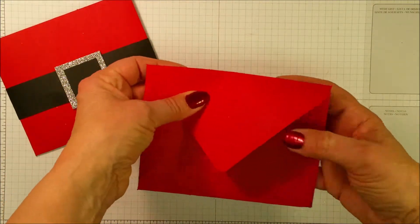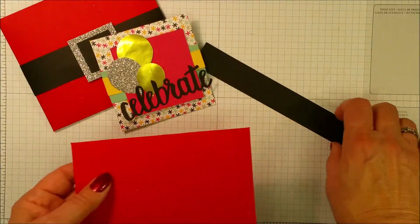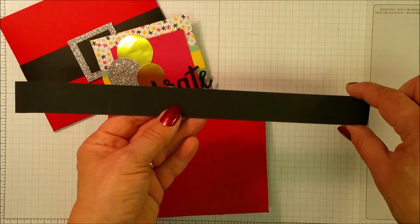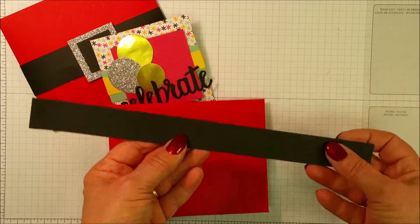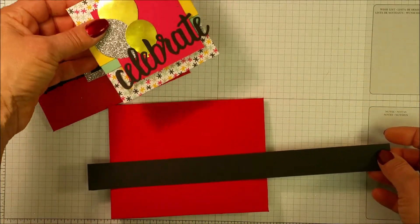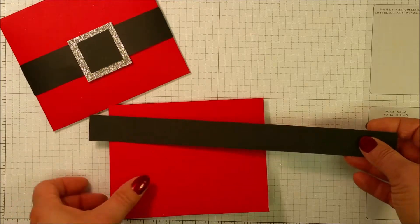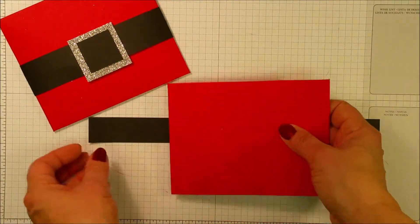Now it just needs the belly band. So for my belly band, I've cut a one inch strip off the side of an 8.5x11 sheet of paper. And for the smaller size gift card envelopes, that works just fine. This one is a little bit larger, and it doesn't quite meet in the middle.